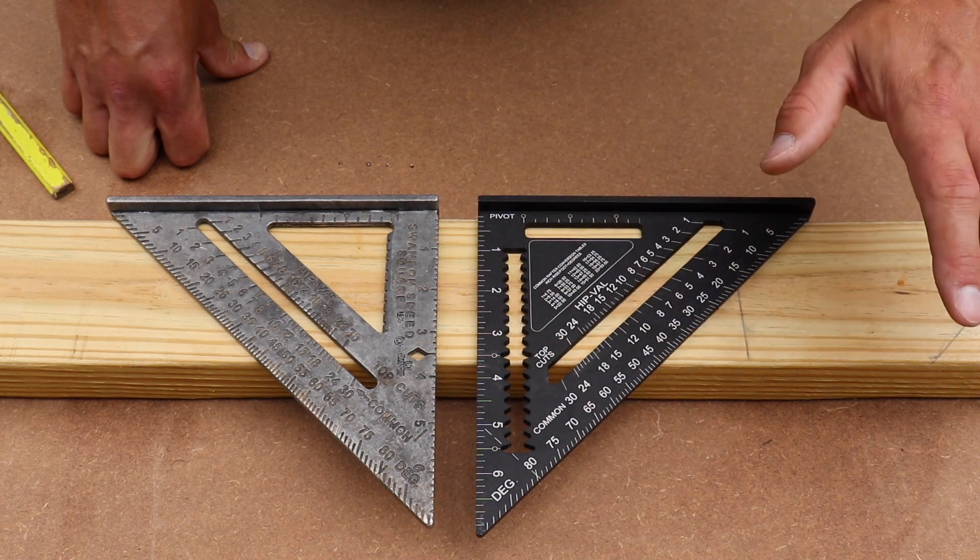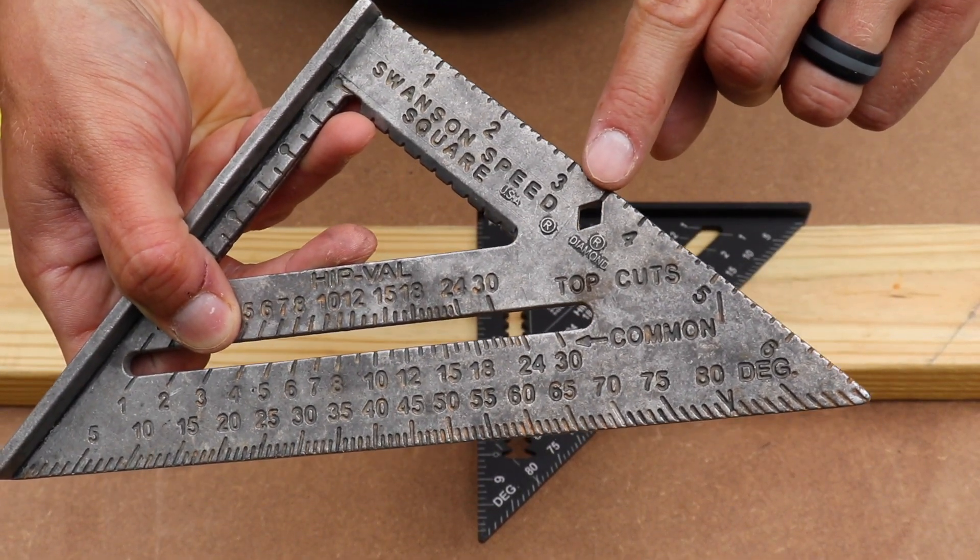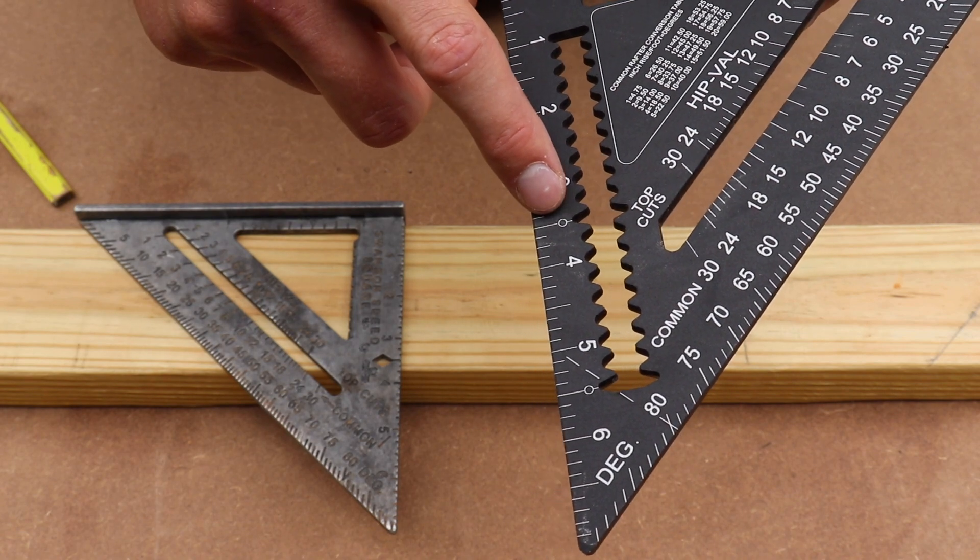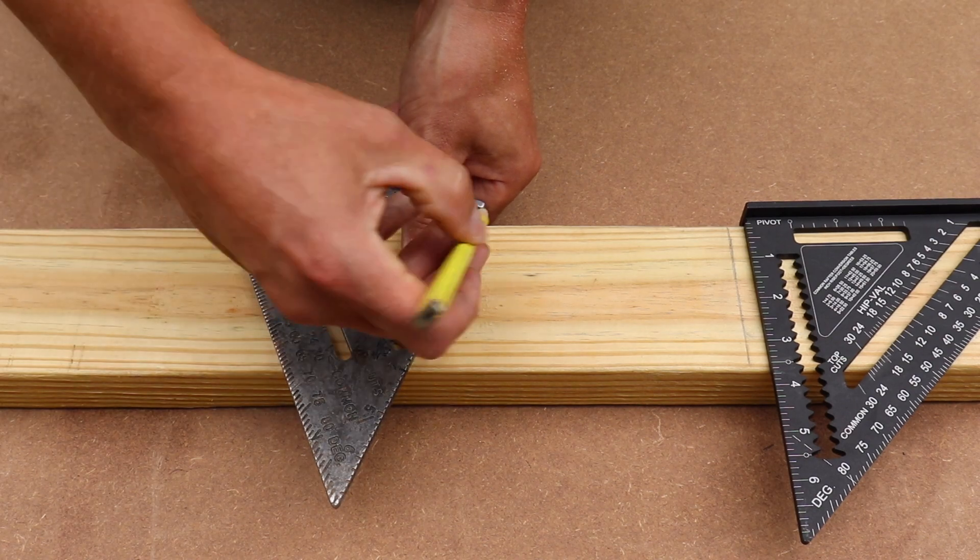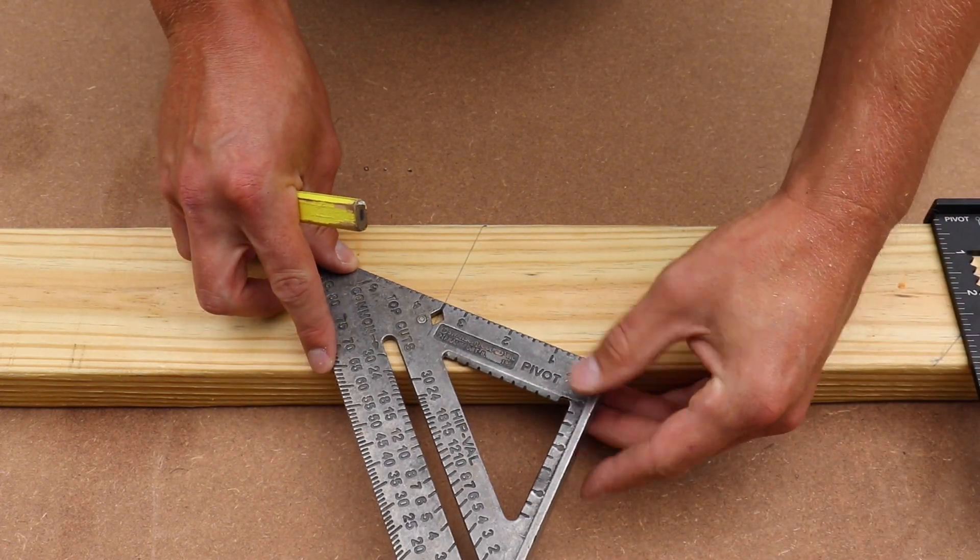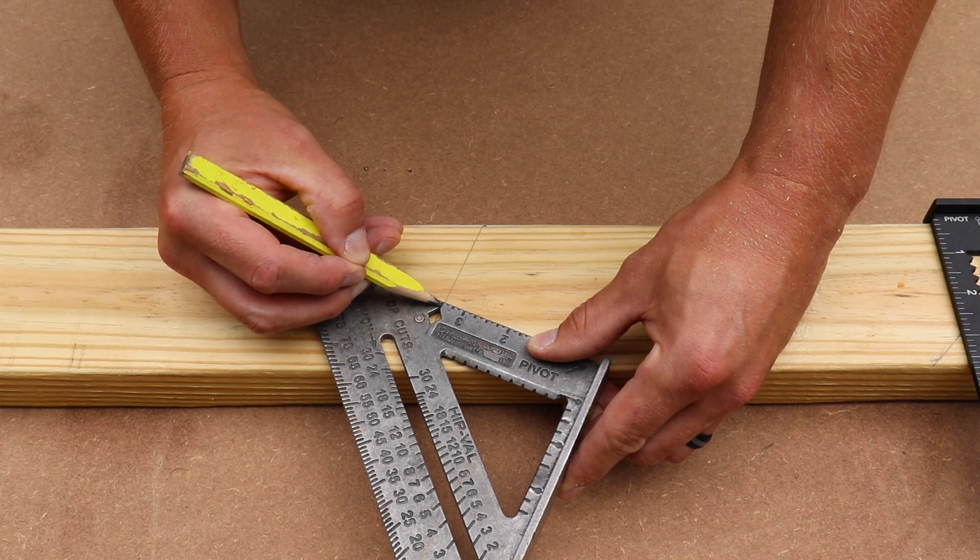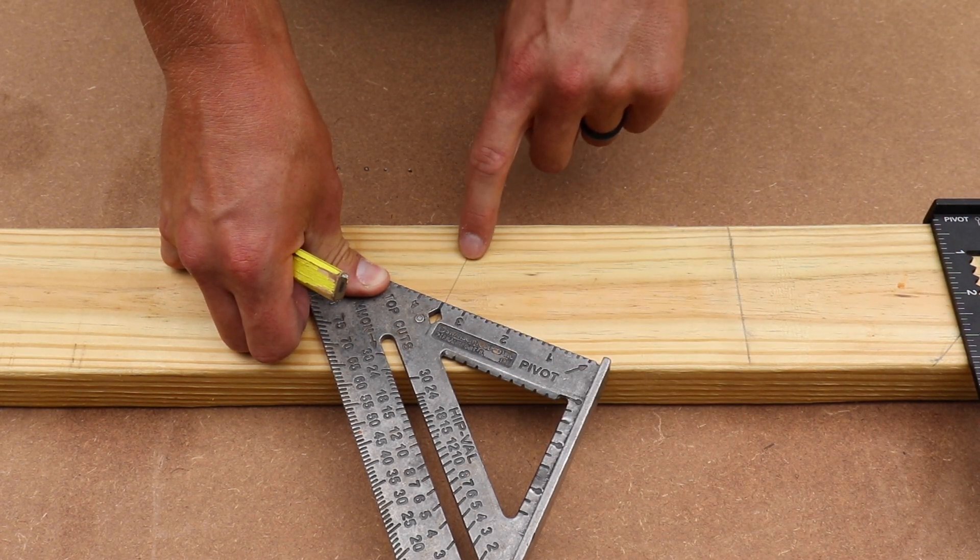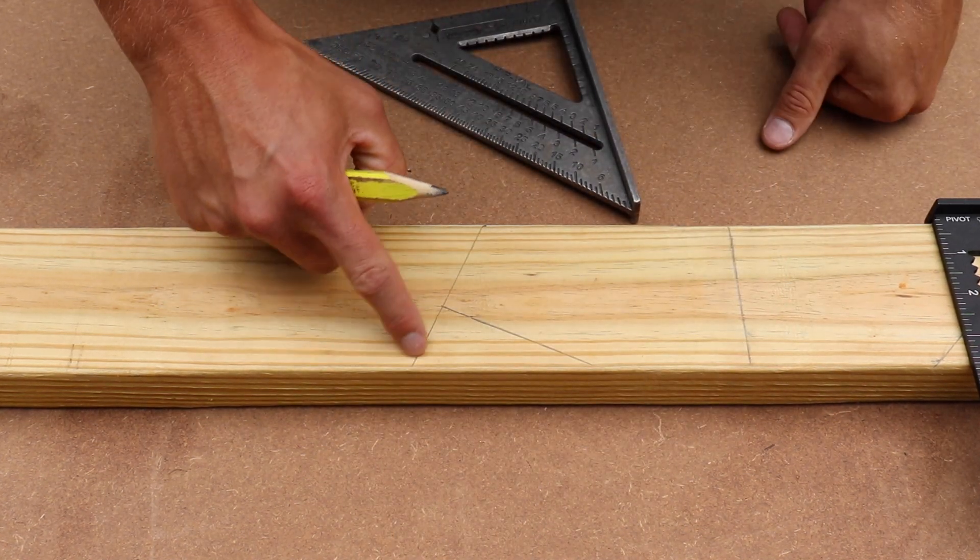Now, another thing you can do with your speed square is mark out your bird's mouth cut for your rafters. And the way you can do that is by making use of this diamond right here. Not all the speed squares are going to have this diamond. But the way you would do it is let's say you have a roof with a 5/12 pitch, and we'll just make a mark for that. And you want to put a bird's mouth on it. What you would do is flip this over. The line that you made for your rafter for the 5/12 pitch, you want to run that right through the center of this diamond. And you want to have your pivot point mounted or pushed flush against your 2x4. So you can see this line is running right through that diamond. And then you just make a mark. And now you have your layout for your bird's mouth.